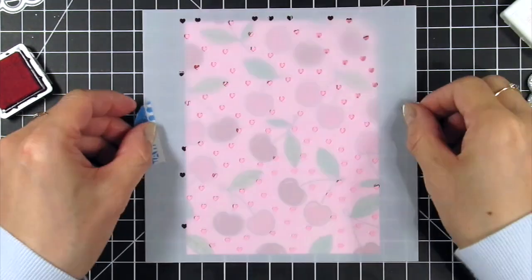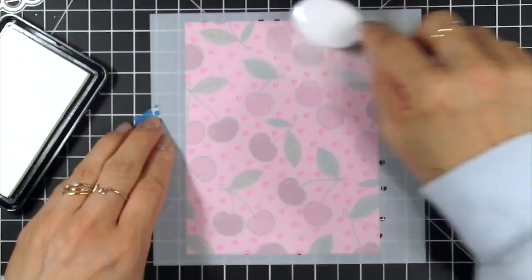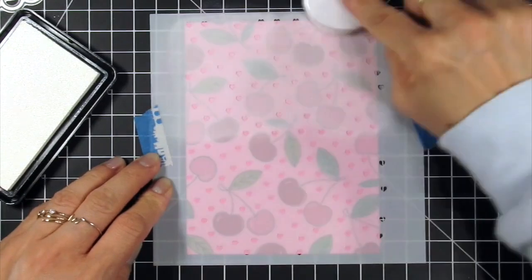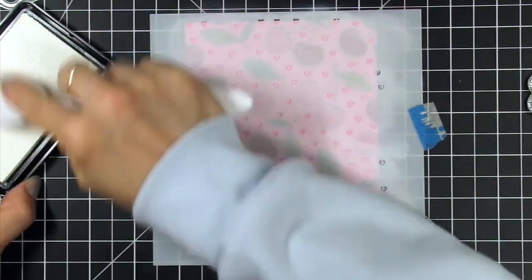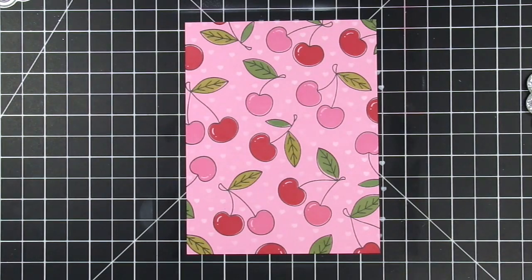I will do the same with the pink panel however this time I'm going to use a white blender brush with sugar cube pigment ink. I'm using a very light hand with this ink so the hearts will be subtle and show up more at certain angles than others. It's a really cool effect.